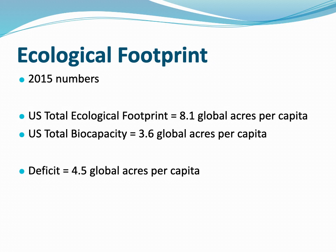That's how much land would be needed to provide the resources for life in America. The total US biocapacity is 3.6 global acres, so there's not enough land to provide all of the needs we're placing on the environment — there's a deficit of four and a half global acres per person. This is why the US goes to other countries to find resources, and why we ship goods in and are dependent on other countries for certain resources.